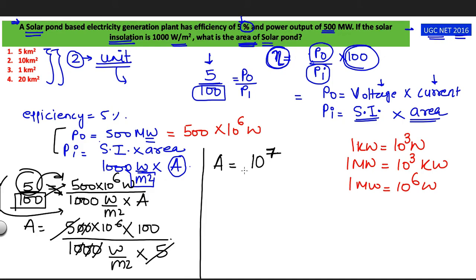So my area would be 10 to the power 7 meter square. This is the area I am getting in meter square but if I look at the options there is no value in the meter square, every value is in the kilometer square. So what I am going to do I am going to convert this value into kilometer square.